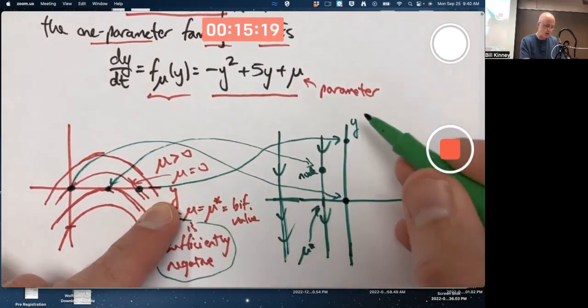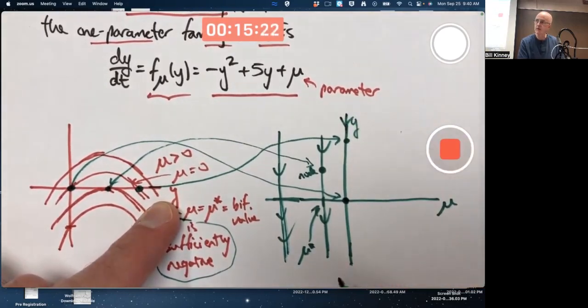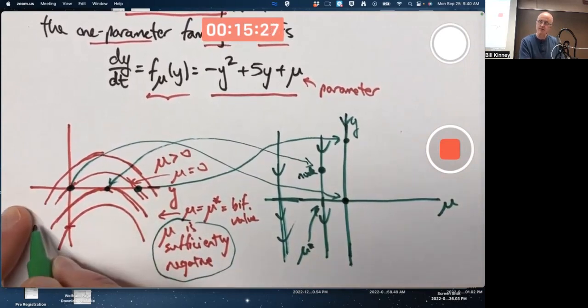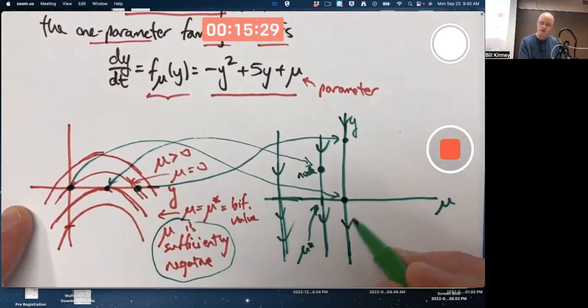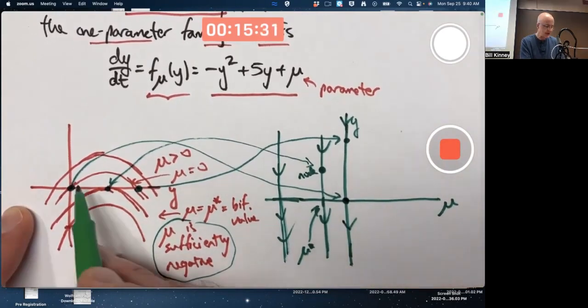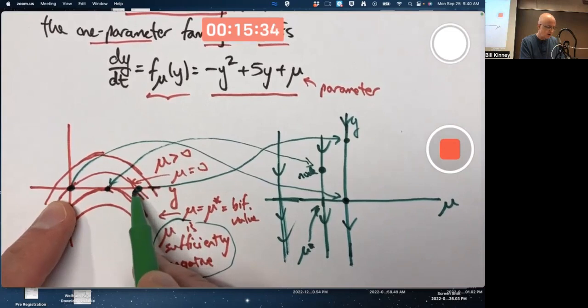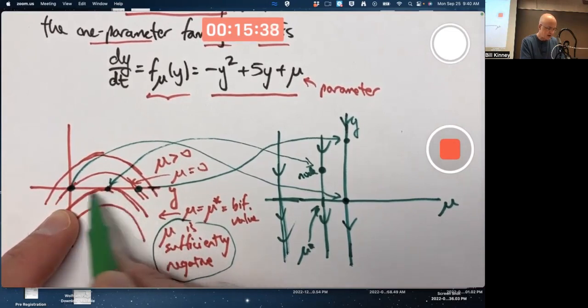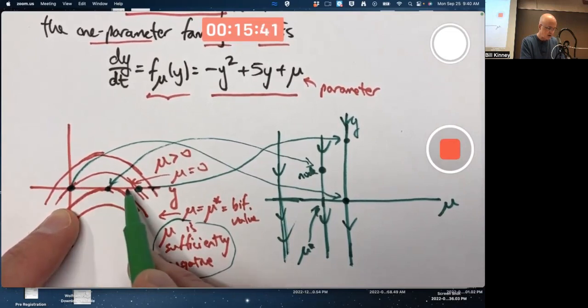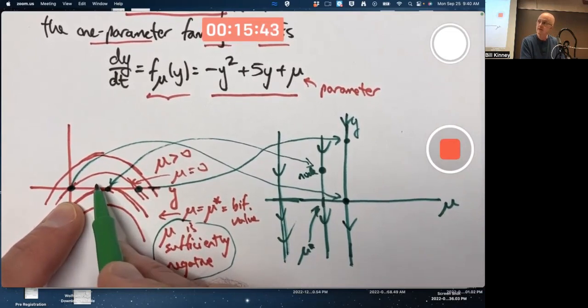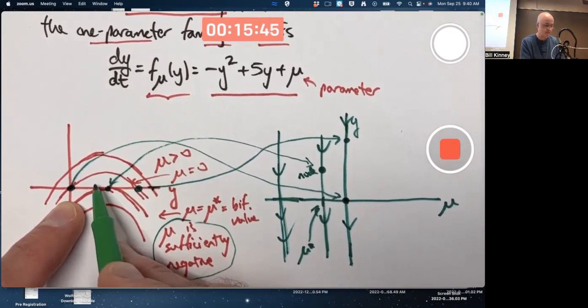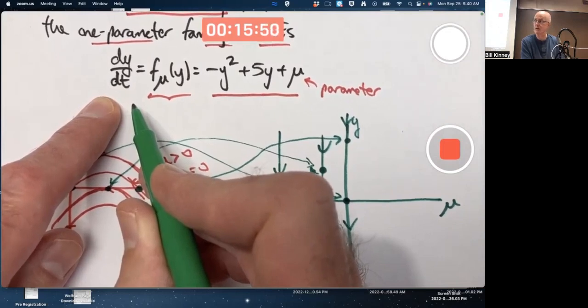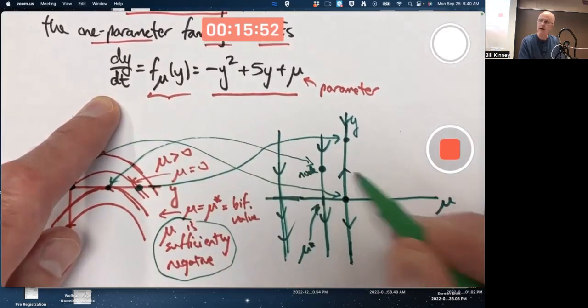When y is sufficiently large here, f is negative, so up here you're going to have downward pointing arrows. When y is sufficiently negative over here, f is still negative, so you have downward pointing arrows here as well. But in between, well, okay, I guess I'm focused on this graph. In between here and here, focused on the graph where mu is zero, f is positive. So dy/dt for solutions in the slope field is positive. Your solutions increase. You have upward pointing arrows.